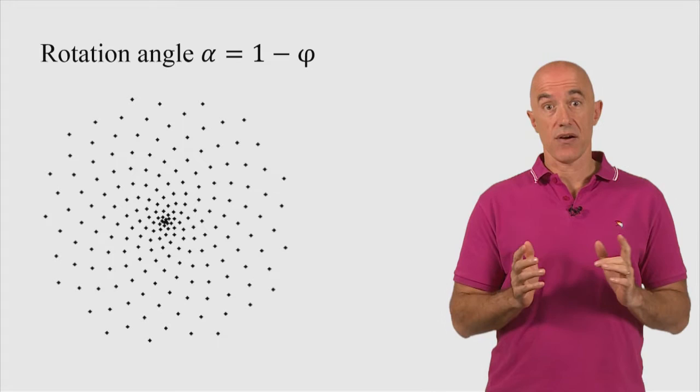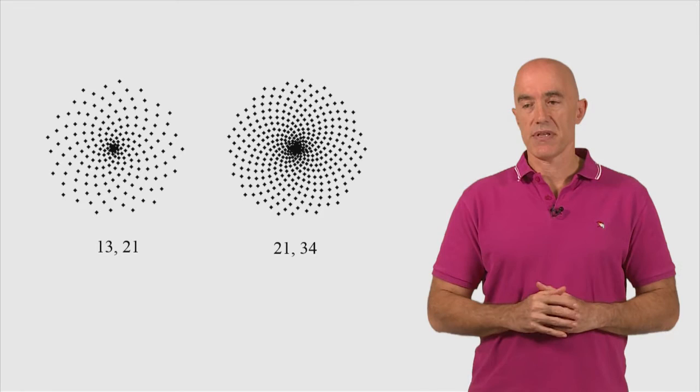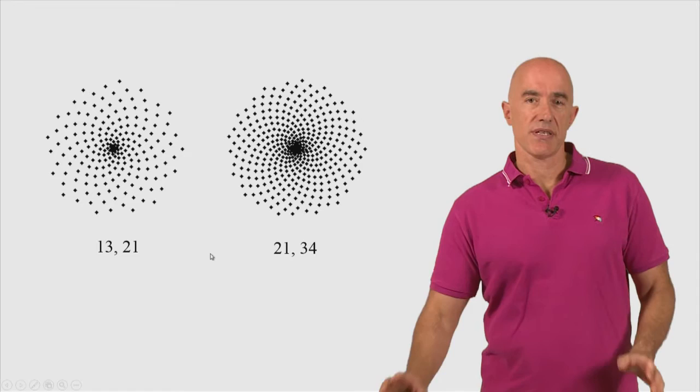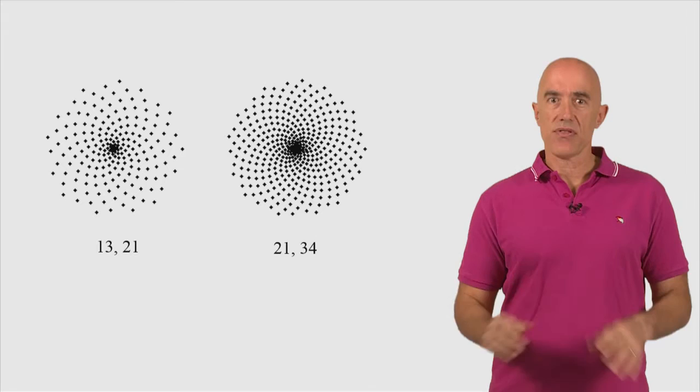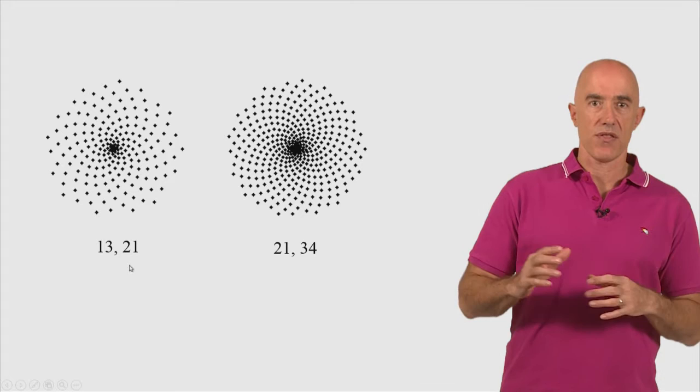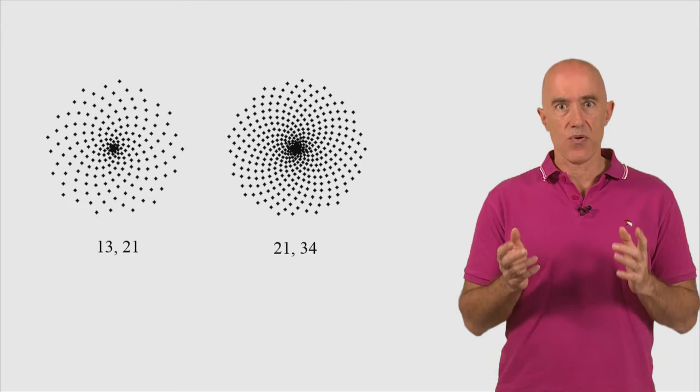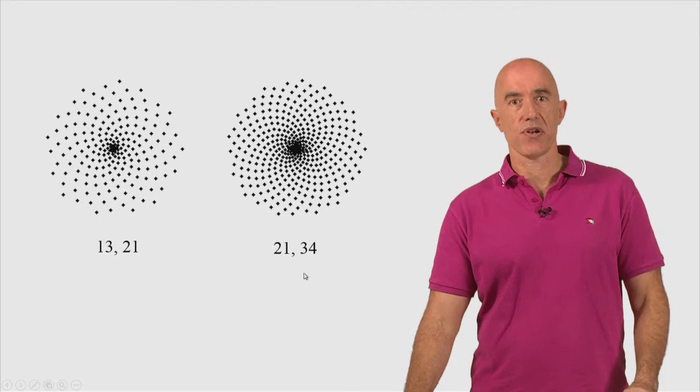And we can look at two of these implementations. The difference between these two is that I change the velocity at which the florets move out. We can count the number of spirals. Here we have 13 or 21, depending on whether you're counting the clockwise or counterclockwise spirals. 13 and 21 are Fibonacci numbers.